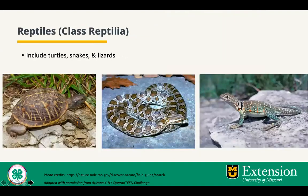Next we have reptiles, or the class Reptilia. Reptiles share certain characteristics with each other. The majority live on land or are terrestrial. They breathe with lungs. They are also ectothermic or cold-blooded. They have thick, tough, dry skin with scales that prevent desiccation and injury — desiccation meaning the loss of moisture or water. And finally, most lay eggs on land with generally soft, leathery shells.